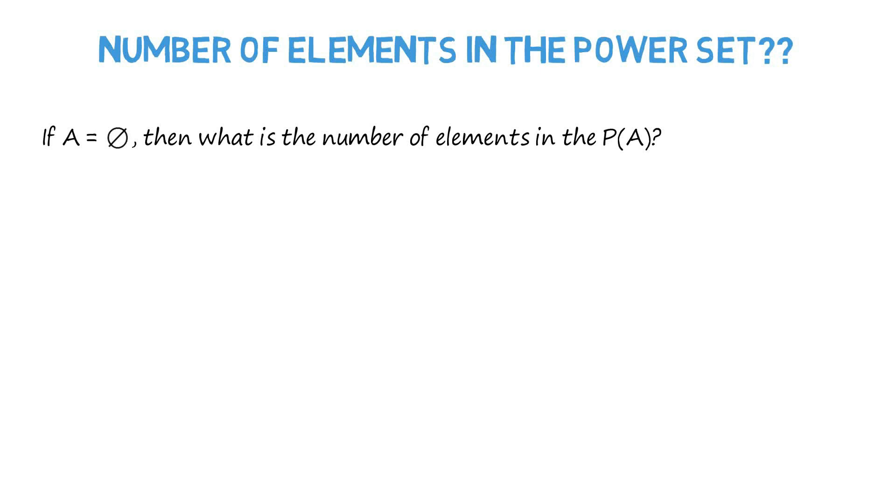We know power set of a set is the collection of all the subsets of the given set. We need to determine all the subsets of the set A and count them up. That will give us the number of elements of the power set of A.